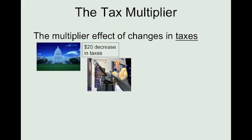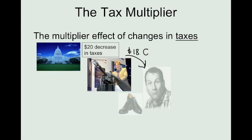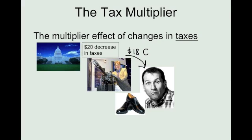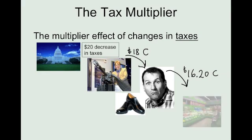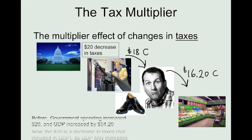When they get that $20 increase in disposable income, they're going to save a certain percent and then spend the rest, just like if they had earned the $20. So the rest of the rounds will continue the same — the next person is going to get that $18, save some and spend the rest, and then it'll be round after round of spending. But the thing that's missing is that first $20 of government spending.